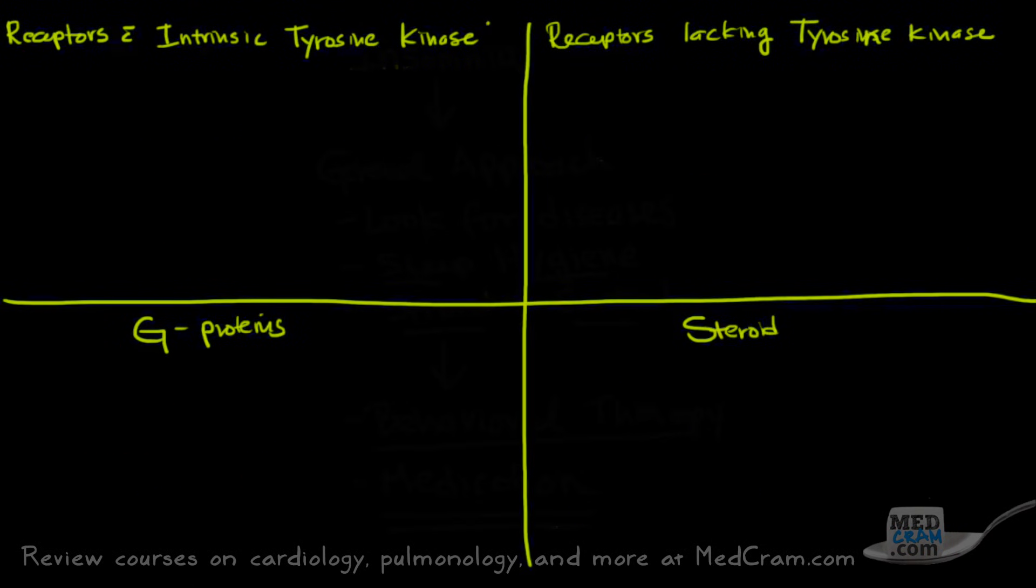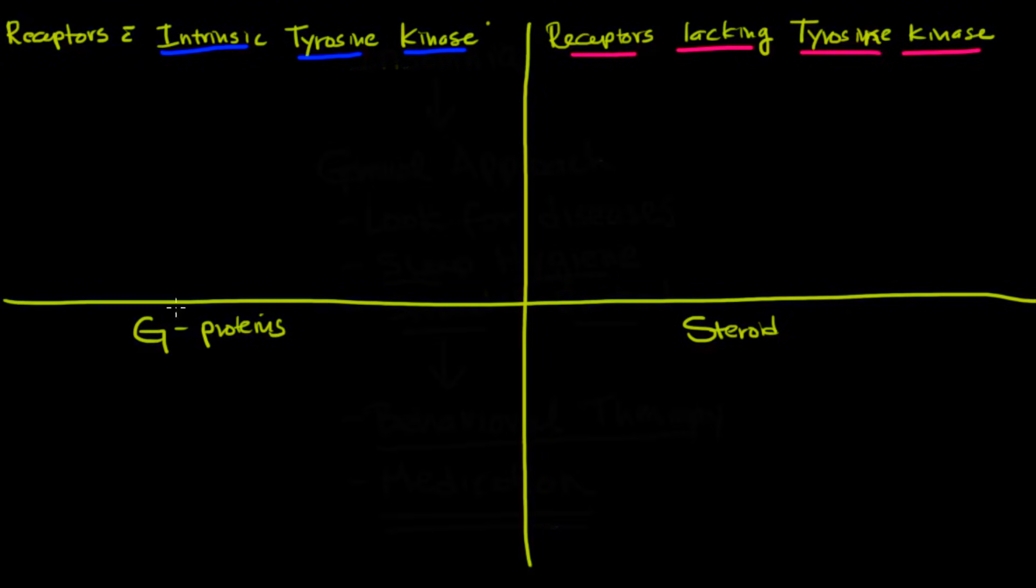Okay, so there's four types of receptors that we're going to talk about. There are receptors with intrinsic tyrosine kinase activity, and then we have receptors that are lacking tyrosine kinase activity, and then we have G proteins and steroids. Let's talk about these receptors with intrinsic tyrosine kinase activity. So these are receptors that directly control the entry of cells into the cell cycle. So they directly control cell cycle. You can see why this would be a target for cancer treatments.